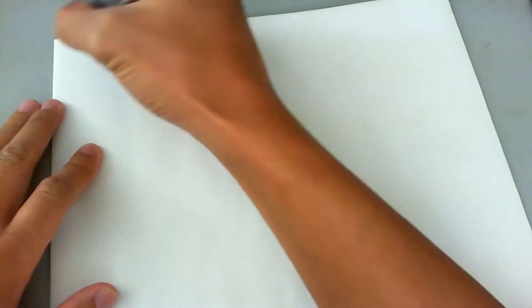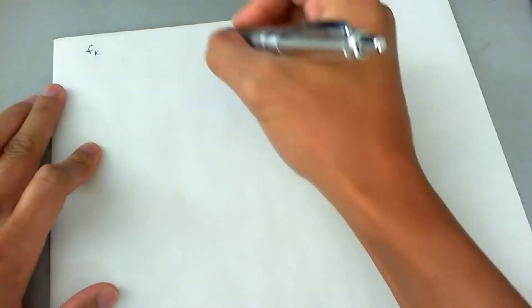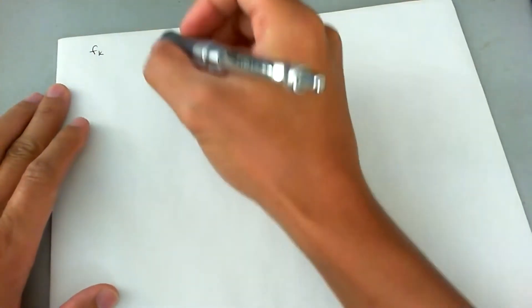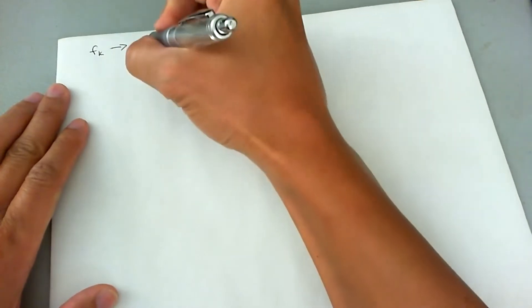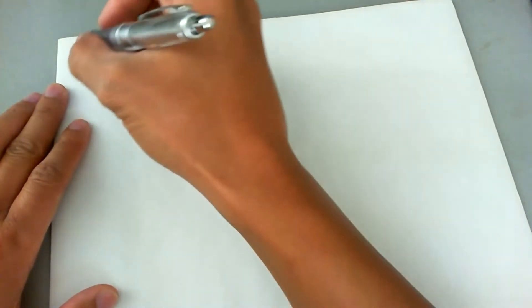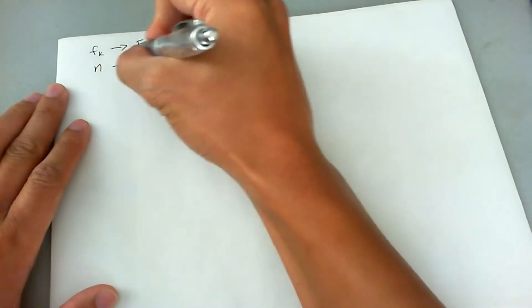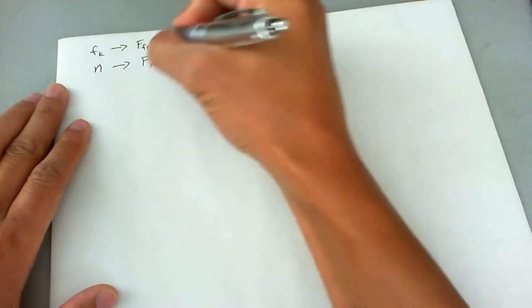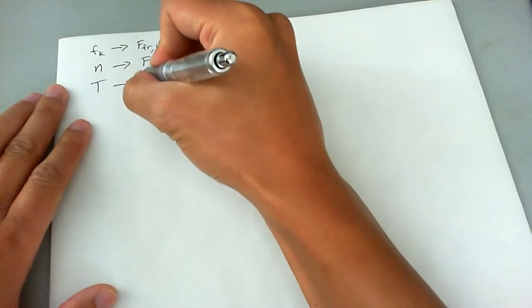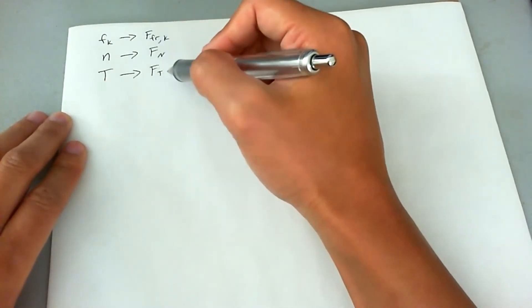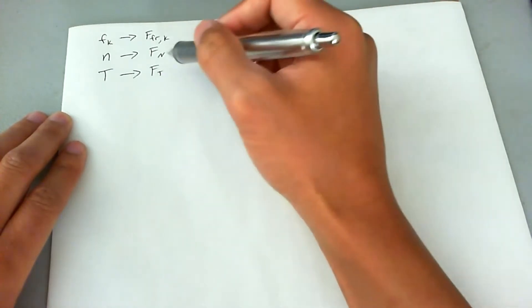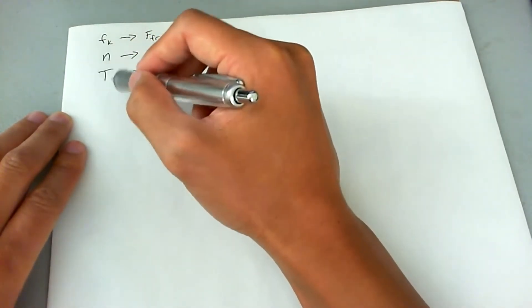The first thing I want to note is a few variable changes. In the problem, they give the kinetic friction force as F sub K, but I'm going to write it as force sub friction kinetic. They also give N for normal force, but I'll say force sub N. For tension, they give a big T, but I'll write it as F sub T. This notation is better because it specifies the force and delineates between the different types of forces.